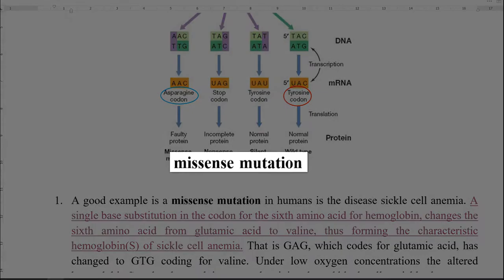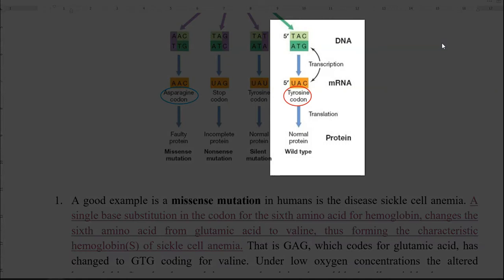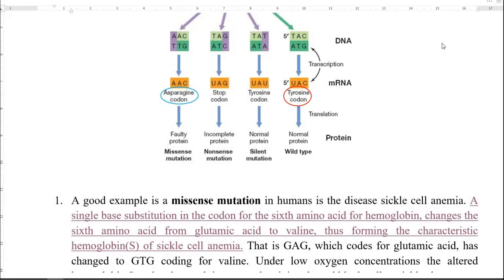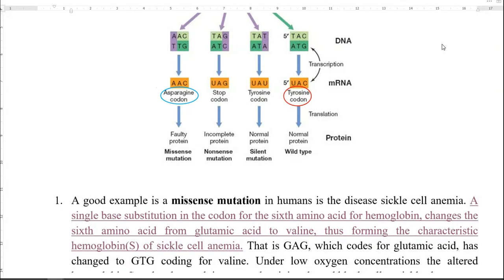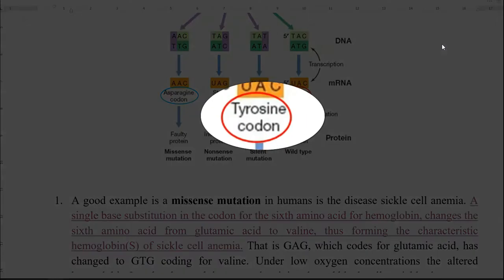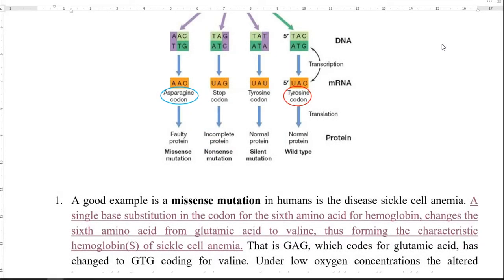The first important type is the missense mutation. When a normal DNA is transcribed, it produces an mRNA that codes for tyrosine — the normal protein of the wild type organism. However, when a mutation occurs and the sequence is changed, the normal UAC is converted into AAC due to the point mutation, causing a change in the amino acid coded by the mRNA. So instead of tyrosine, asparagine is coded, which is a faulty protein. This is an example of a missense mutation.